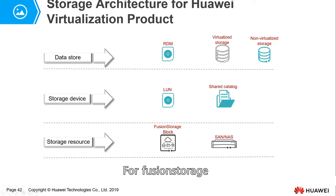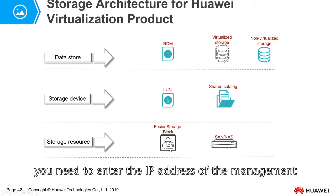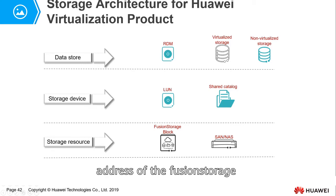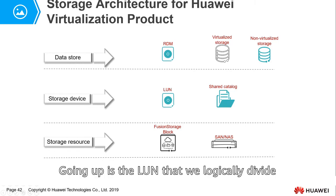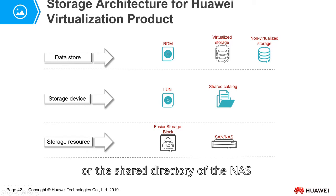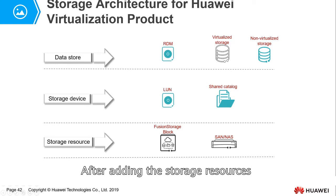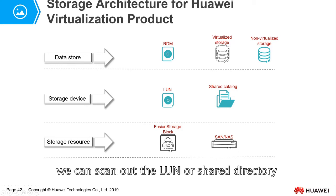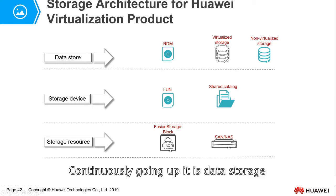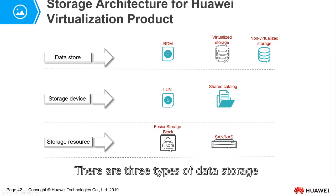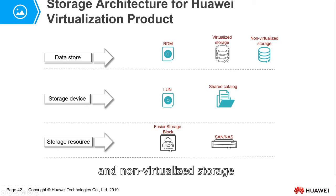For SAN storage, you need to enter the IP address of its management interface. For object storage and NAS storage, their management addresses are needed. Going up is the LUN we logically divided or the shared directory of the NAS — all called storage devices. After adding the storage resources, we can scan out the LUN or shared directory. Continuing up is data storage, which has three types: raw device mapping, virtualized storage, and non-virtualized storage.